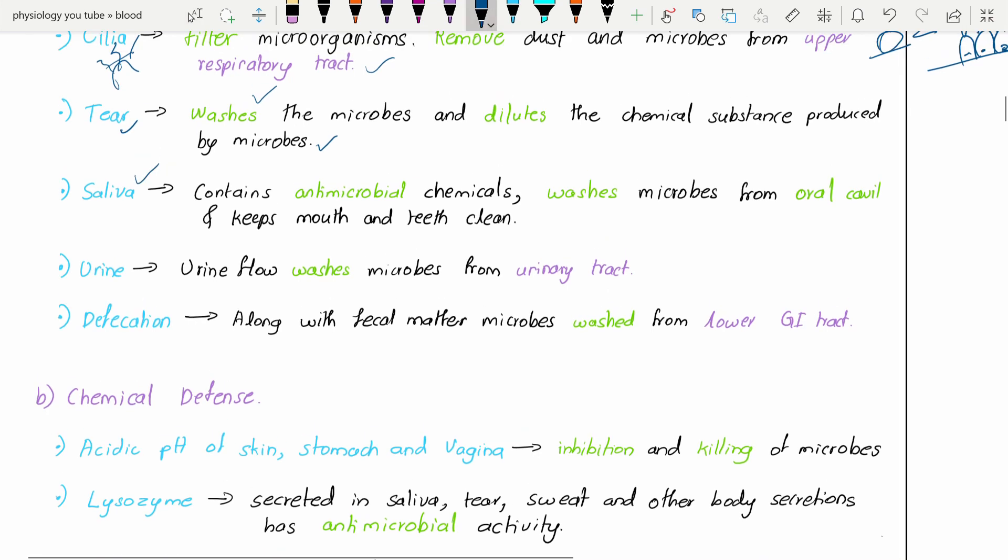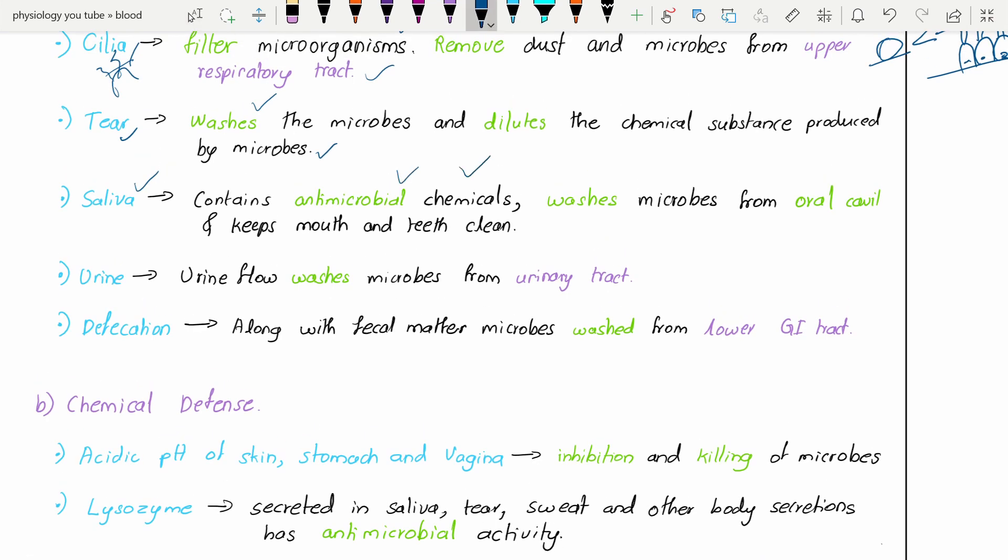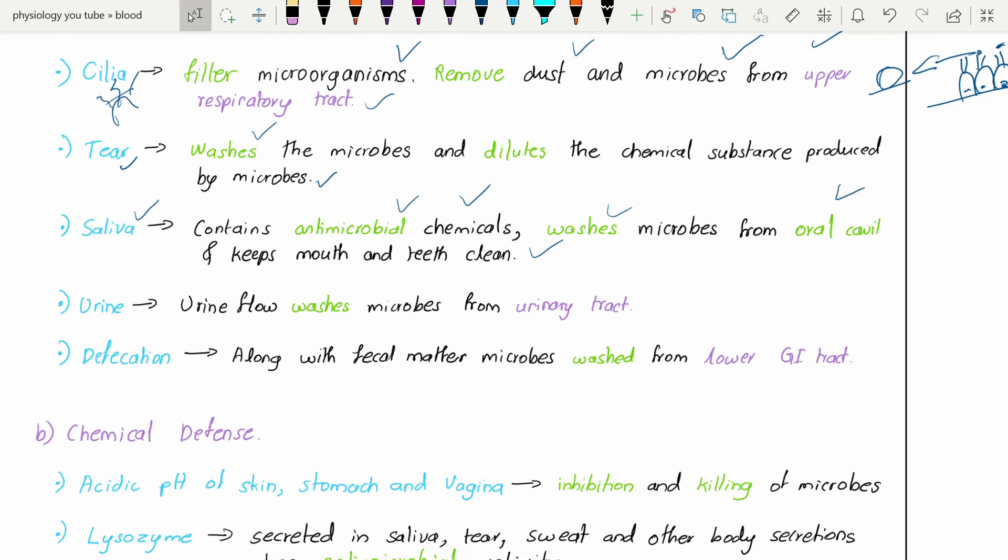Saliva - it contains antimicrobial chemicals and washes the microbes from the oral cavity, involved in maintaining oral hygiene. Most of the time by default, whenever we got hurt or got injuries on elbows or knees, we used to apply our saliva over that surface because it has antimicrobial property.